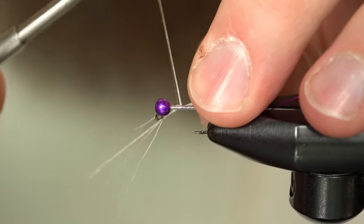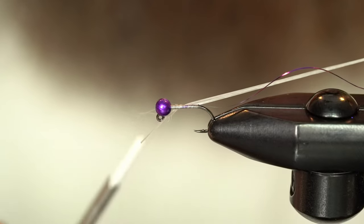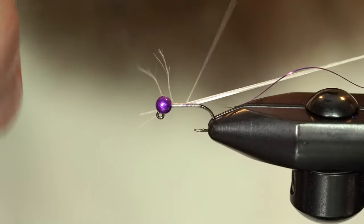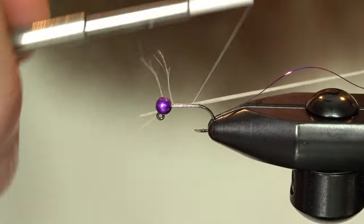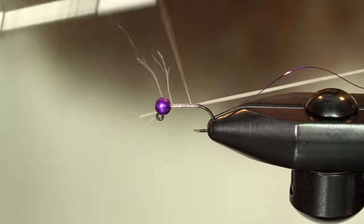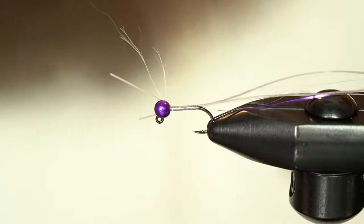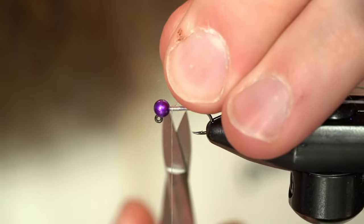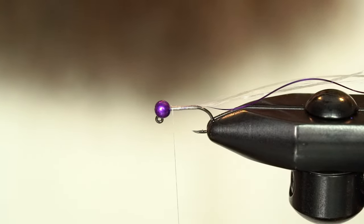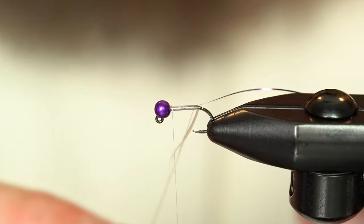And secure that. And then this is where I can slide it down a little bit. And then I'll work it all the way back to the end of my thread wraps. And snip out my tag. Gather them all together. Secure.